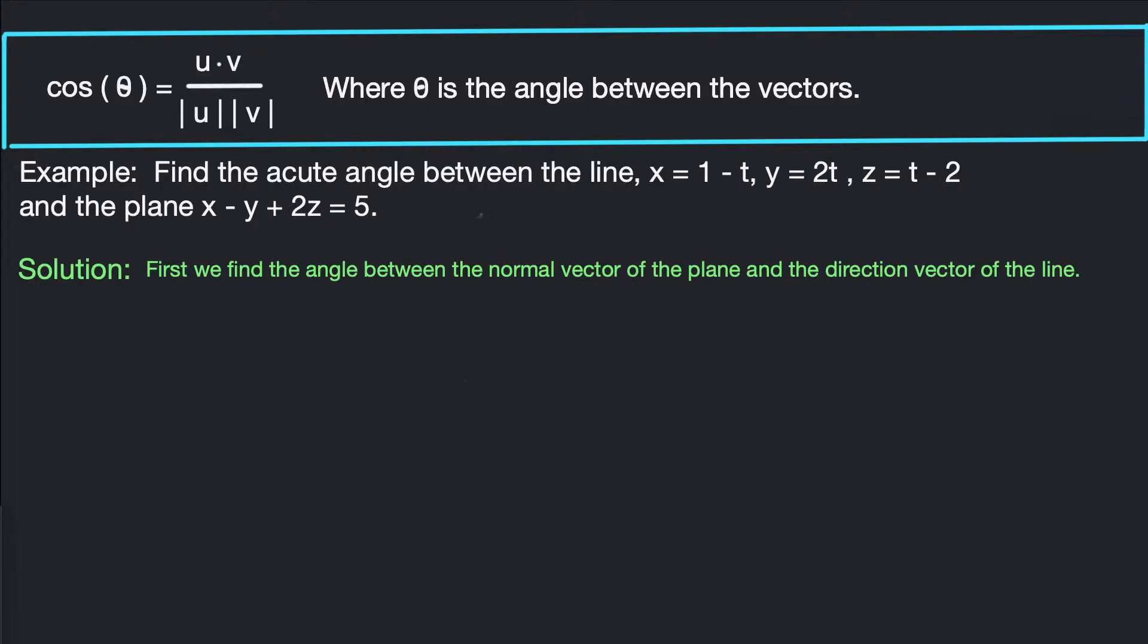Alright so first what we're going to do is we're going to find the angle between the normal vector of the plane and the direction vector of the line. So what is the normal vector of the plane? That's our first goal or first thing we want to find is the normal vector of the plane. So the normal vector is always just the coefficients of x, y, and z in your plane equation. So 1, negative 1, 2. So the normal vector is ⟨1, -1, 2⟩.